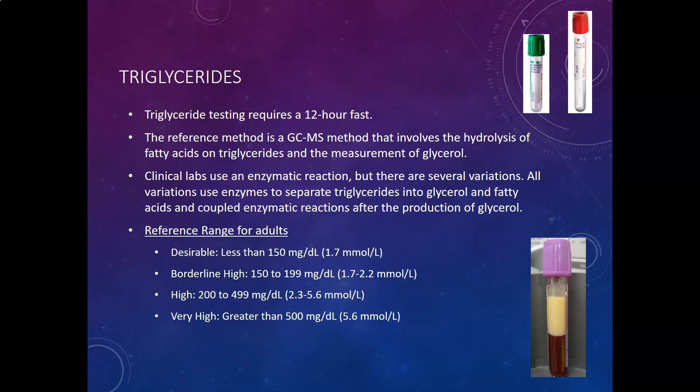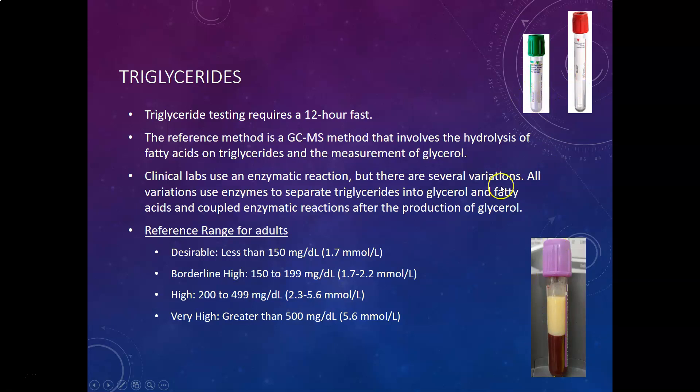The reference range for adult triglycerides (fasting): desirable is less than 150 mg/dL; borderline high is 150 to 199 mg/dL; high risk for cardiovascular disease is 200 to 499 mg/dL; and very high risk is greater than 500 mg/dL. High triglycerides will make the plasma very cloudy — sometimes looking like milk if really high — due to the high amount of chylomicrons. Specimens of choice are heparinized plasma or serum.